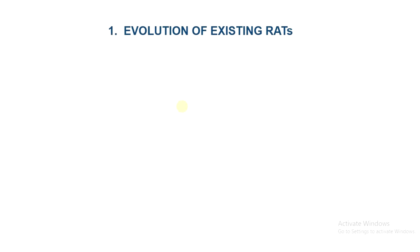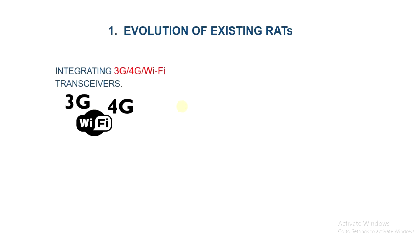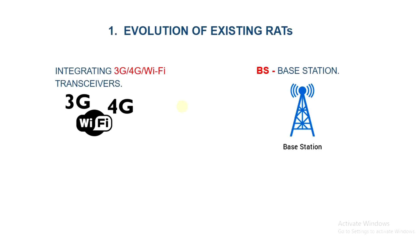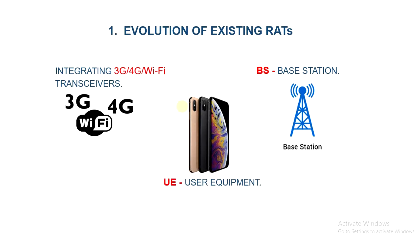Major telecom companies such as Qualcomm have recently been working on developing LTE in the unlicensed spectrum, as well as integrating 3G, 4G, and Wi-Fi transceivers into a single multi-mode base station unit. In this regard, it is envisioned that future user equipment will be intelligent enough to select the best interface to connect to the RAN based on the quality of service requirements of the running application.